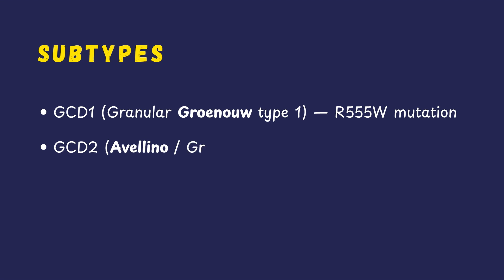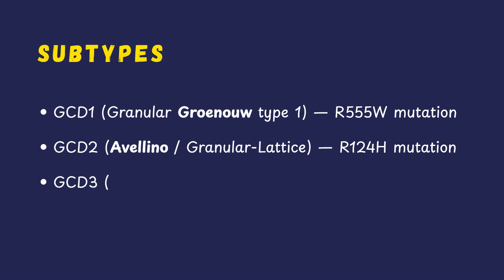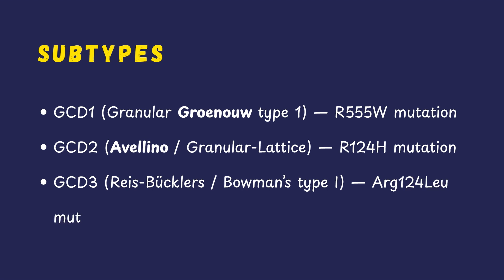GCD Type 1 is the classic granular type, caused by the R555W mutation. GCD Type 2, also known as Avellino dystrophy or granular lattice dystrophy, is caused by the R124H mutation and combines features of both granular and lattice dystrophy. GCD Type 3, also known as Bowman's layer dystrophy type 1 or Reis-Bücklers corneal dystrophy, is caused by the ARG124C mutation and was discussed in our previous video.